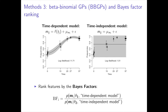For each SNP, we fit time-dependent and time-independent GP models. In the time-independent model, we used white noise and fixed beta-binomial covariance functions, while we also included the squared exponential covariance function in the time-dependent model to capture the temporal structure. Finally, we calculated the Bayes factors for each SNP by comparing the marginal likelihoods of the time-dependent and time-independent BBGP models.